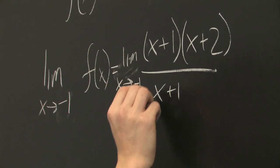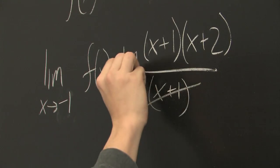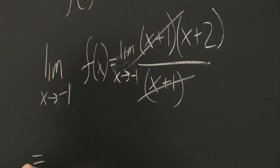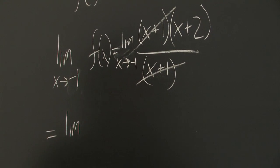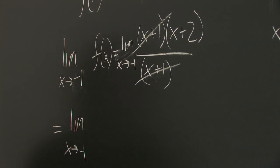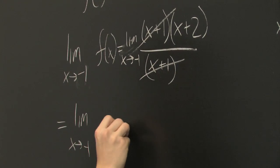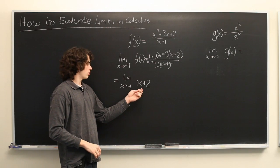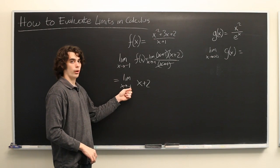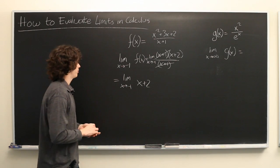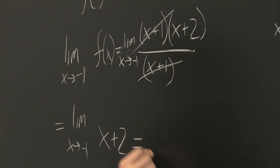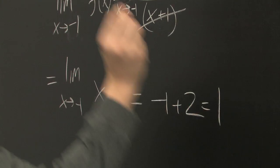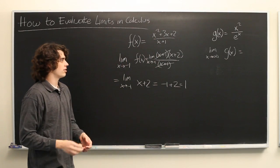But we can simply cancel out this x plus one factor that appears in the top and bottom. And what we are left with is the limit as x goes to negative one of x plus two. Well here this function is continuous and defined at this point, so we can simply plug it in. Negative one plus two equals one. Easy as that.